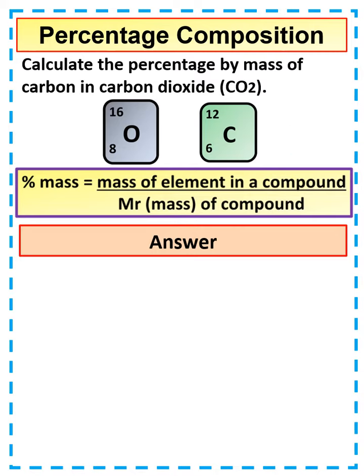The equation that we need to use is percentage by mass equals the mass of the element in the compound divided by the total mass of the compound.